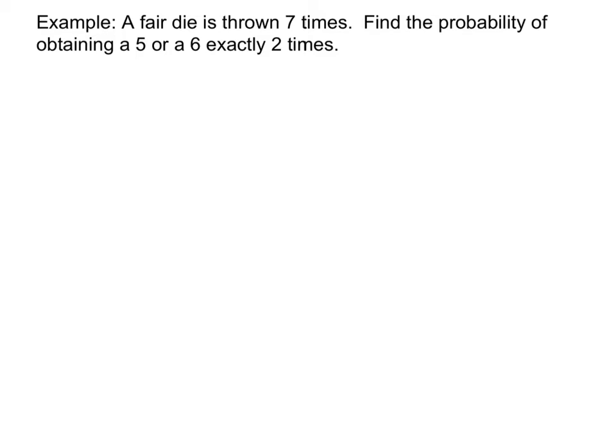So the first question here. A fair die is thrown 7 times. Find the probability of obtaining a 5 or a 6 exactly 2 times. So first of all, is this problem a PDF problem, or is this a CDF problem? Well, it says the die is thrown 7 times. That means that our N is 7. Our number of trials is 7. Then they want to find the probability of something happening exactly 2 times. That means we're going to use PDF. We're looking for one specific event. I want it to happen 2 times out of 7. That means my R is going to be 2.